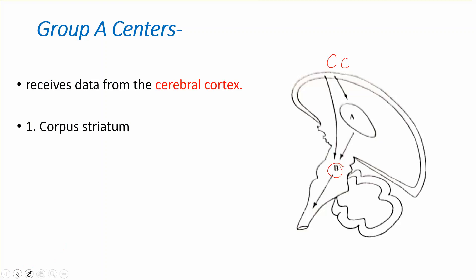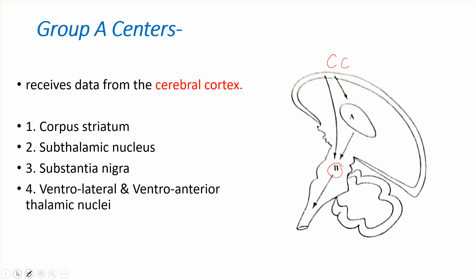The extrapyramidal system consists of the corpus striatum, the subthalamic nuclei, the substantia nigra, and the ventral lateral and ventro-anterior thalamic nuclei. The subthalamic nuclei and thalamic nuclei are related to the thalamus, substantia nigra is related to the midbrain, and corpus striatum is related to the basal ganglia.